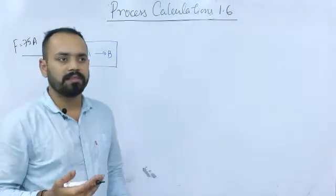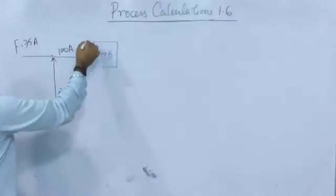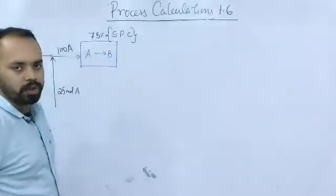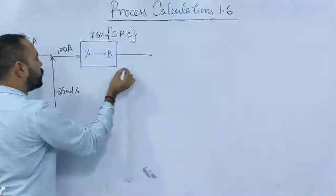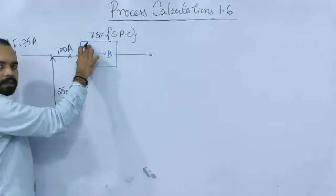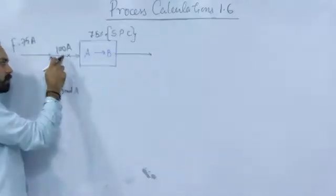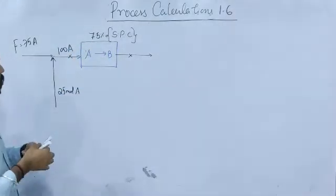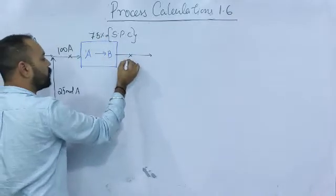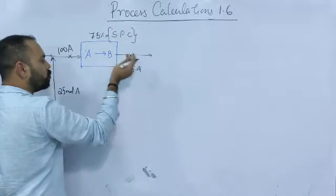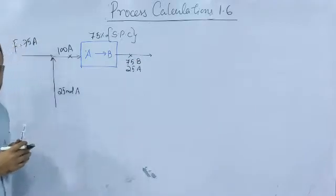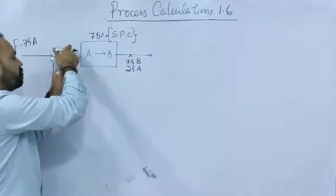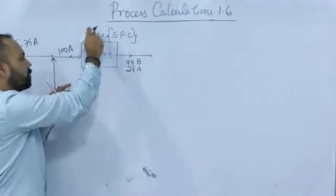In the reactor, reaction occurs and some conversion is obtained. Suppose the conversion obtained in the reactor is 75%. This conversion is called single pass conversion or per pass conversion. It is defined between the point where A enters the reactor and the point where it leaves. Between these two points, 75% of A is converted, so 25 moles of A remain and 75 moles of B are formed. The formula is: (fed minus leaving) divided by fed equals single pass conversion.